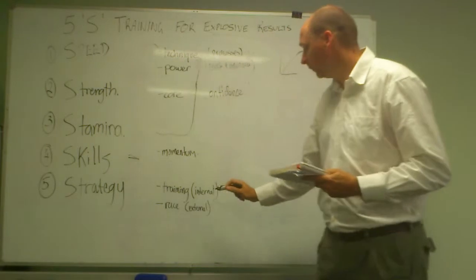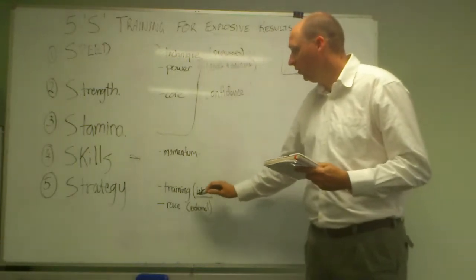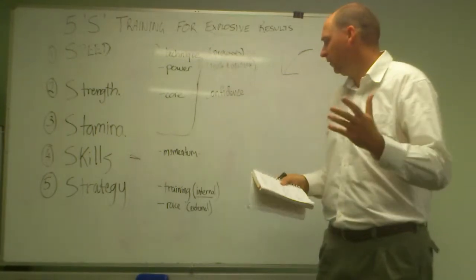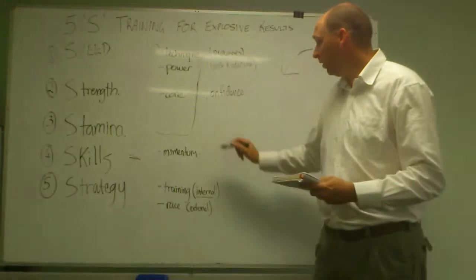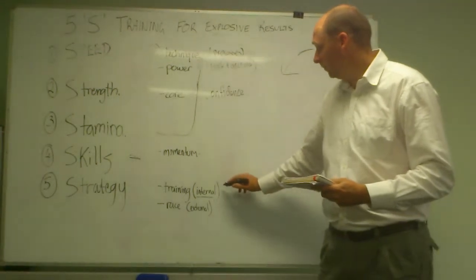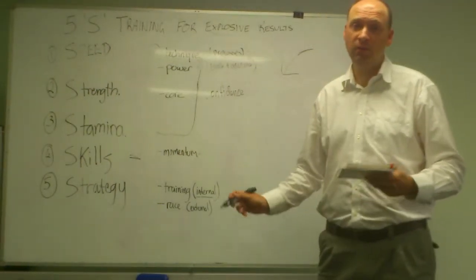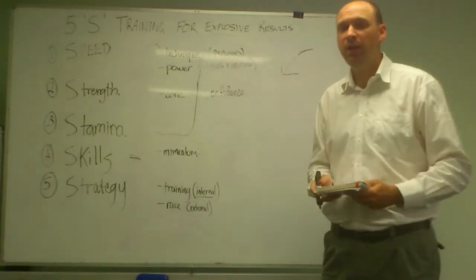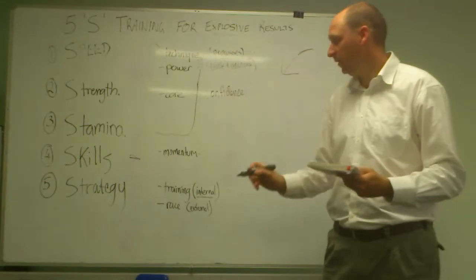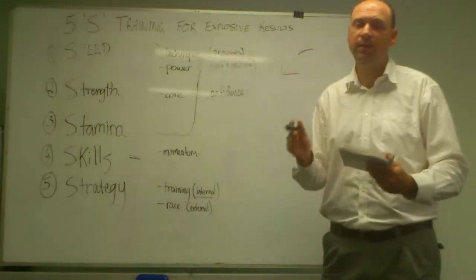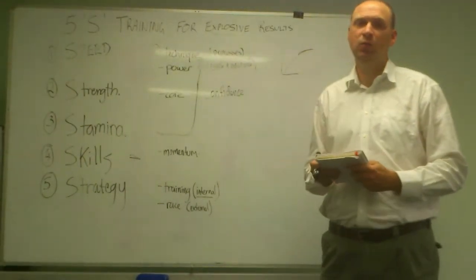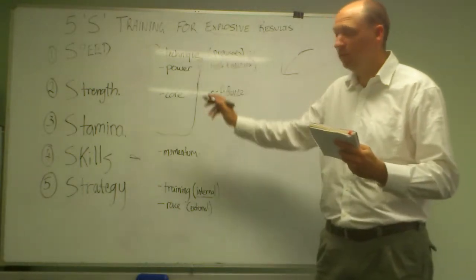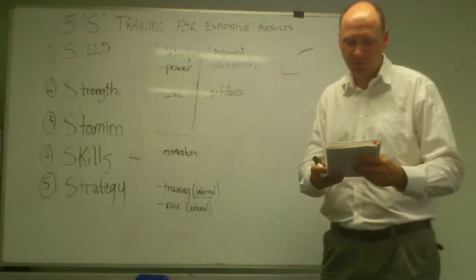And in business, we would call that internal strategy. Like before, I said you might have a great product, but if you don't have the marketing skills to sell that product, then you're going to fall down. So you need to find the weakest link in your processes to build up those skills or the speed or strength, so everything flows together.